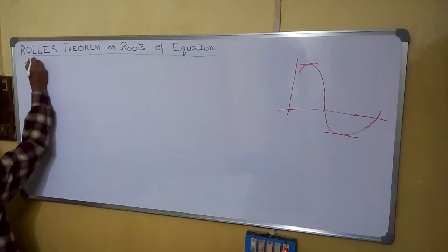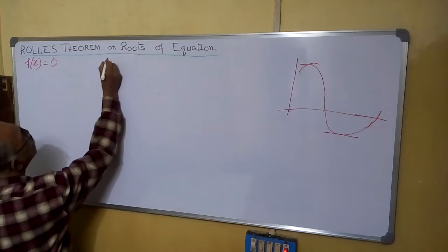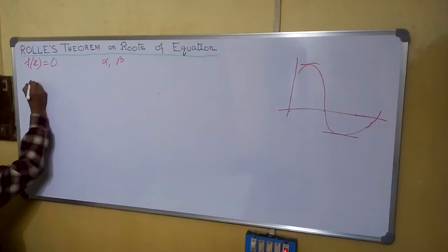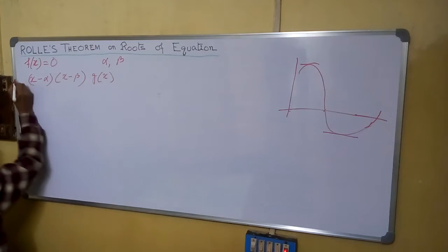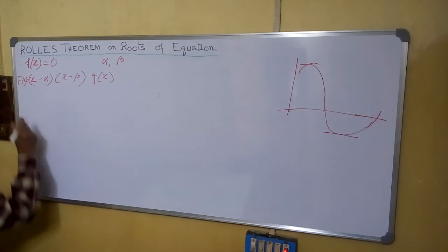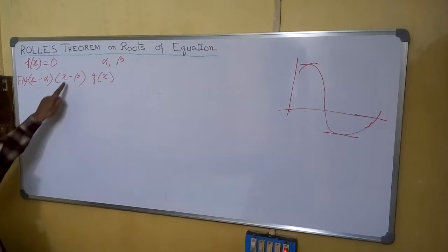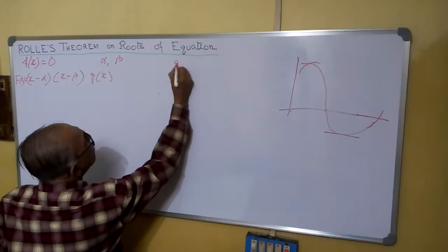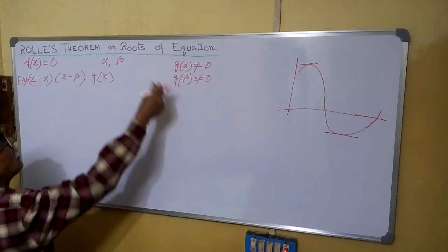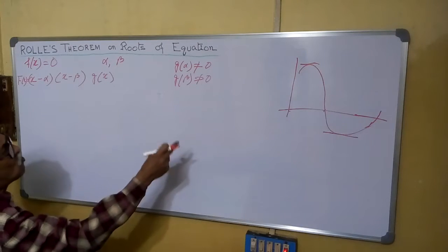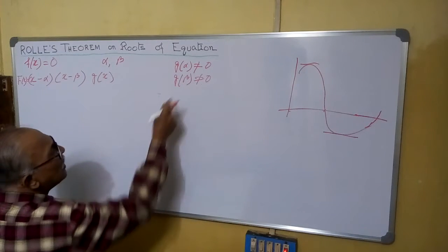Parallel to the x-axis means tan(θ) = 0, therefore f'(x) = 0. Let us assume f(x) = 0 has two consecutive roots, alpha and beta. From here we can say that f'(x) equals (x - α)(x - β) · g(x), where g(x) is another assumed function. At x = α it becomes 0, at x = β it becomes 0. We assume g(α) ≠ 0 and g(β) ≠ 0.